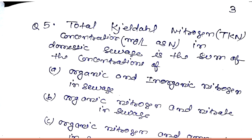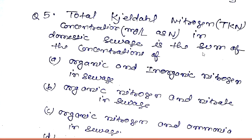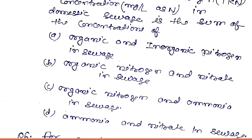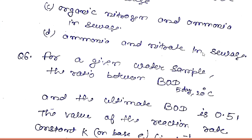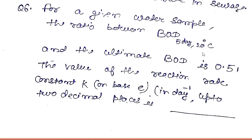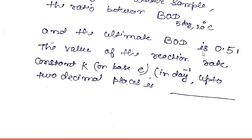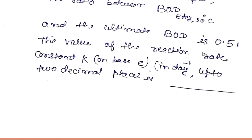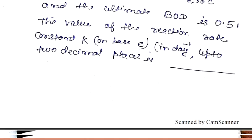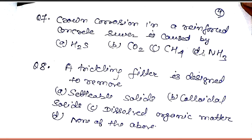Question number six: for a given water sample, the ratio between BOD5 at 20 degrees centigrade and the ultimate BOD is 0.51. The value of the reaction rate constant k (base e) in per day up to two decimal places is blank.